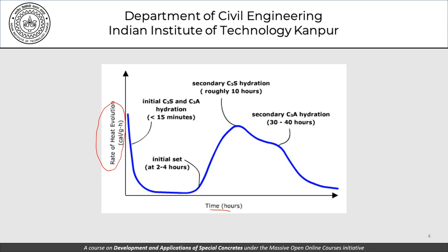There is a large initial peak which goes down; initial set occurs in this region, accompanied by initial C3S and C3A hydration lasting about 15-20 minutes. Then we have another burst of heat evolution coming primarily from secondary C3S hydration, and then secondary C3A hydration which goes on for a much longer period. This discussion is relevant from the point of view of the total heat evolved during hydration of cement and how it is managed in concrete construction.